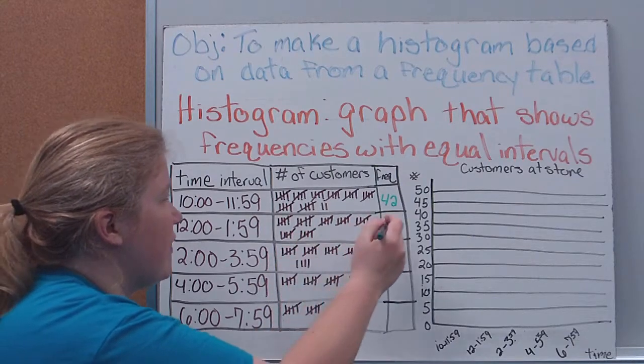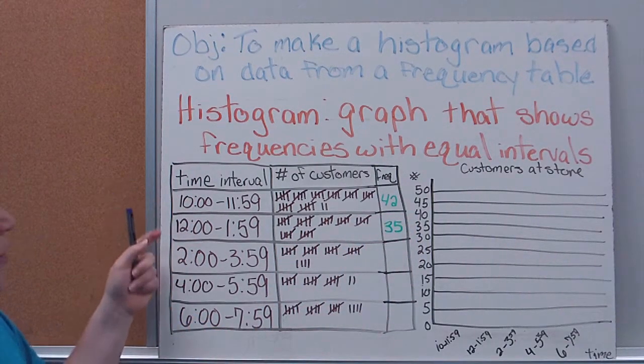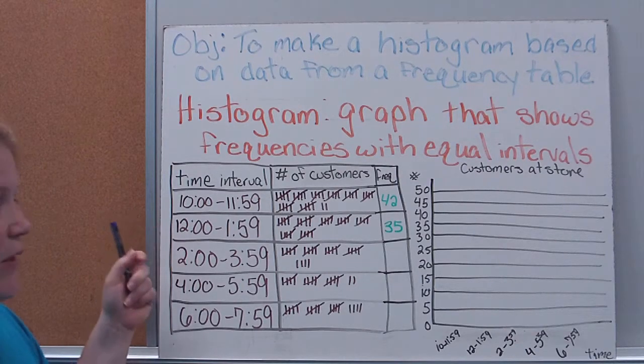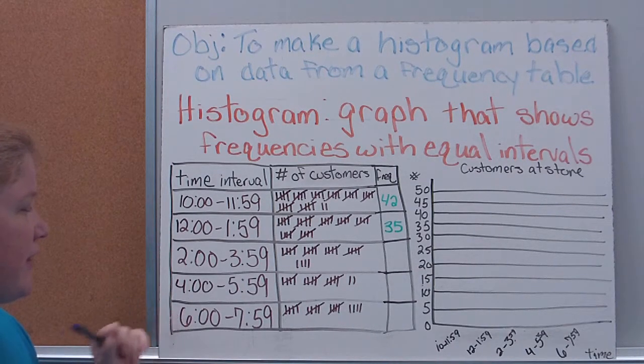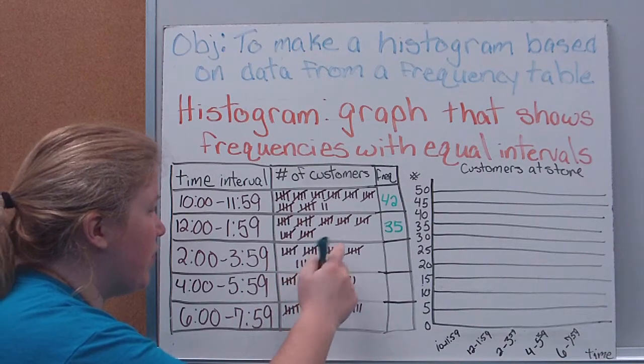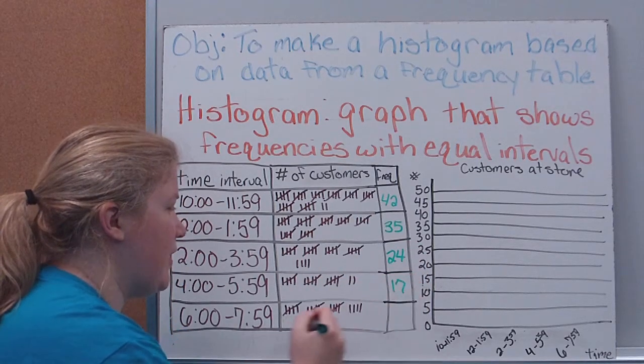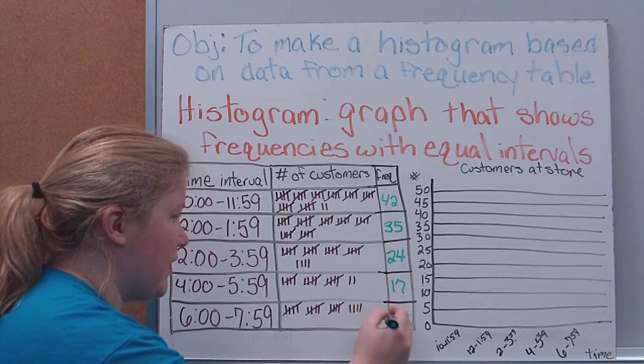35 in the next two. And you'll notice I've got 10 through 12, basically 12 to 2, 2 to 4, 4 to 6, 6 to 8. Here we've got 24, 17, and 19.